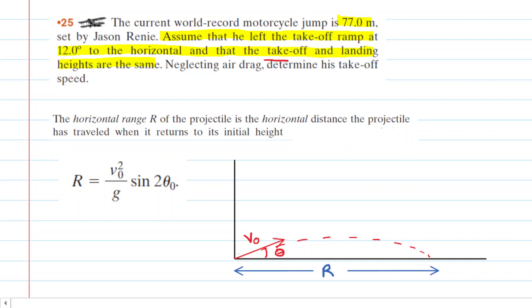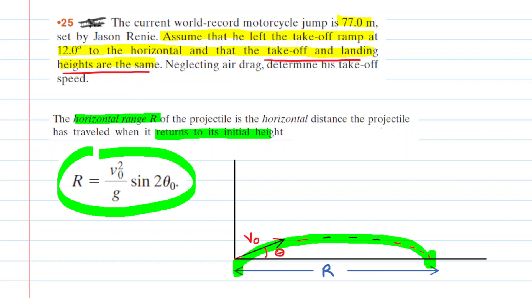That last part, knowing that the takeoff and landing heights are the same, is particularly important because it's going to allow us to solve this question via a bit of a shortcut. Because we know that as long as the traveler returns to its initial height then we can use this equation for the so-called horizontal range. Now a horizontal range is simply the horizontal distance an object travels as it undergoes projectile motion and then returns to its initial height. So as long as we're returning to the initial height then we can use this horizontal range equation.